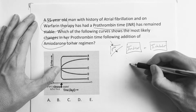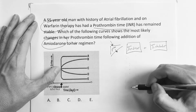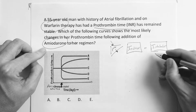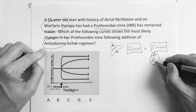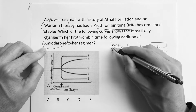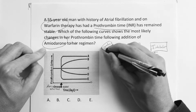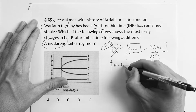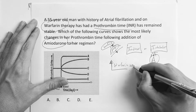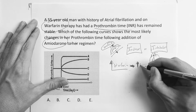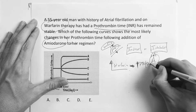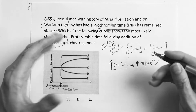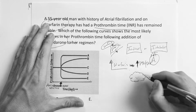If it's an inducer, remember that mnemonic — 'queen barb steals fen-fen and refuses to create the carbs continuously.' The inhibitors were 'magic racks.' Amiodarone fell in the inhibitors — it's the 'A' in 'magic racks.' So it's an inhibitor of P450. If it inhibits P450, it inhibits the metabolism of warfarin, so warfarin levels go up — not being metabolized. And if warfarin goes up, the prothrombin time goes up.